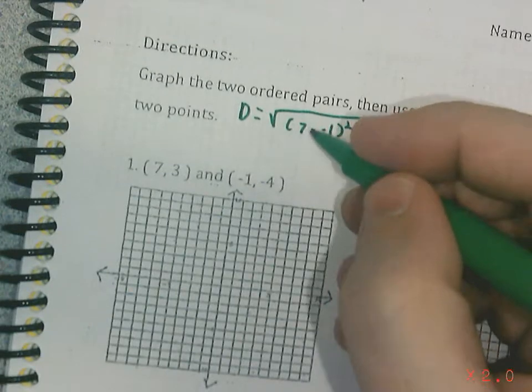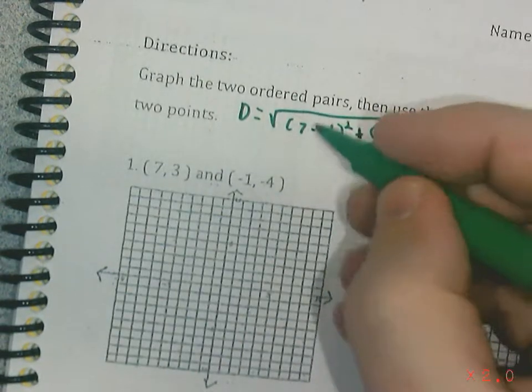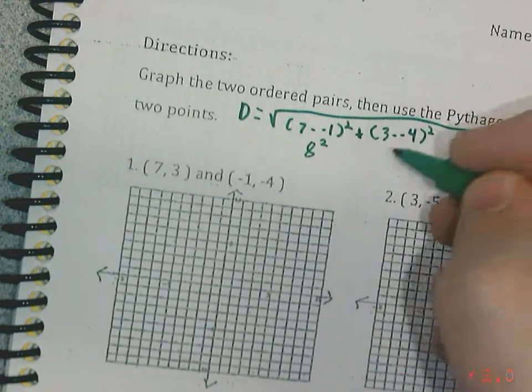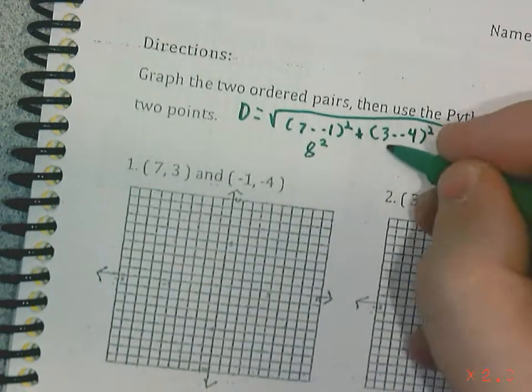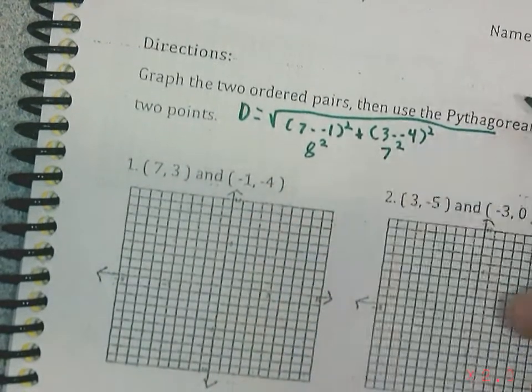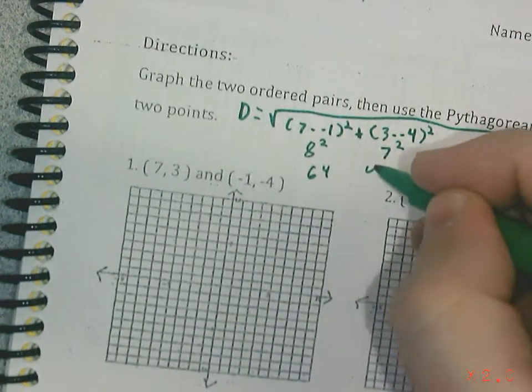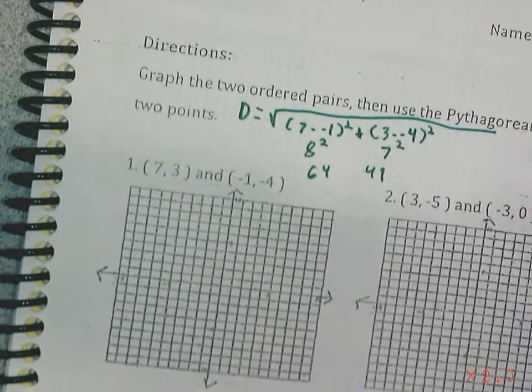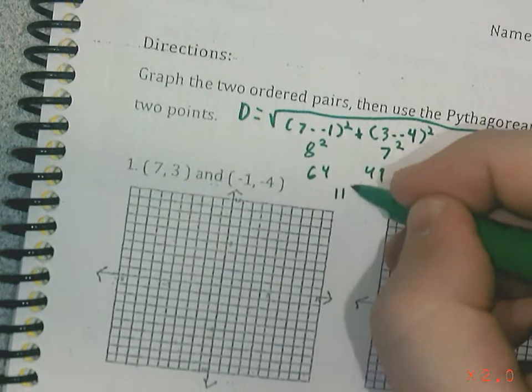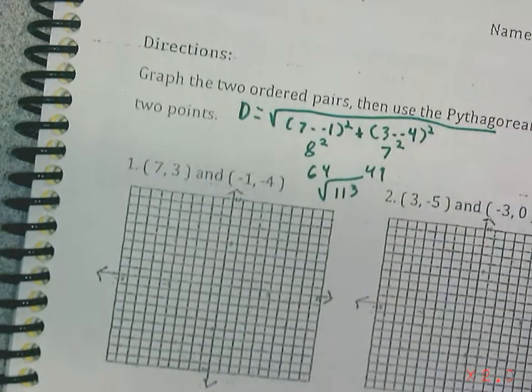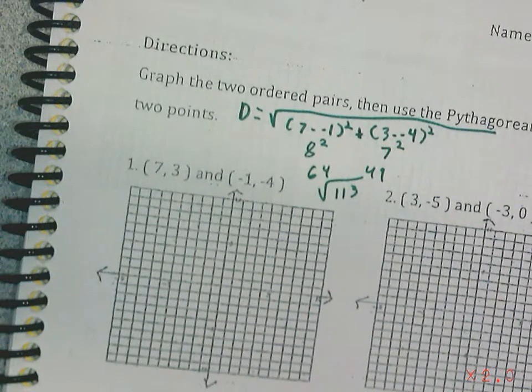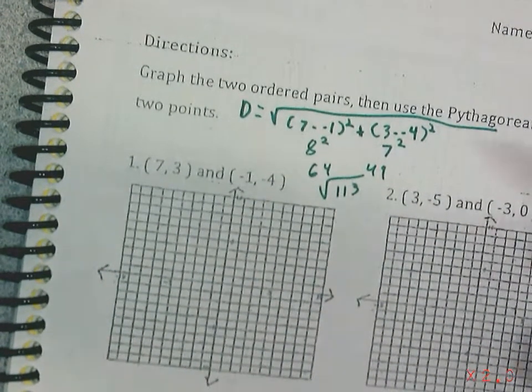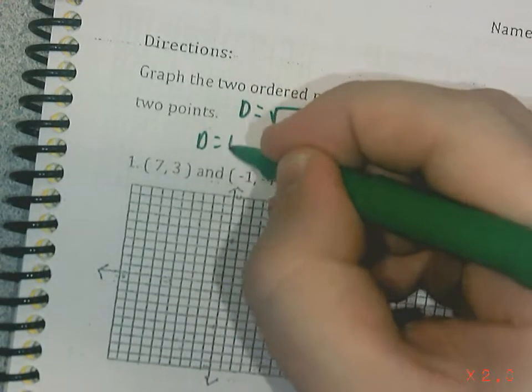So seven minus a negative one, same sign you end up adding, right? So become eight squared. And then three minus a negative four would be like adding, so become seven squared. So square those, you get 64 and 49. 64 plus 49 gives you 113, and then you square root. And the distance is going to equal the square root of 113, which is 10.6.